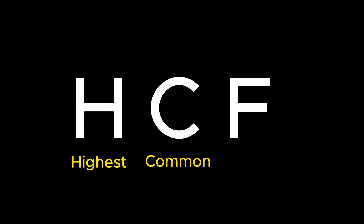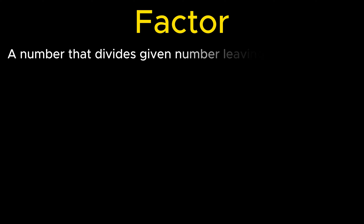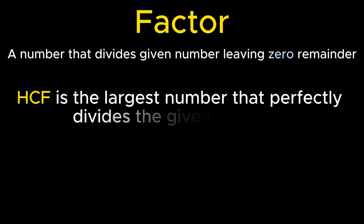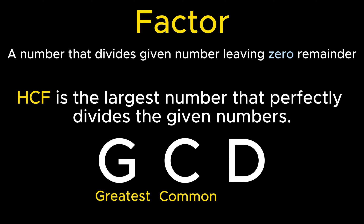In this video we will understand the concept of HCF and different methods to calculate it. HCF stands for Highest Common Factor — a factor refers to the number that divides another number giving zero as remainder. Thus HCF practically gives the largest number that perfectly divides the given numbers. It is also known as GCD, which stands for Greatest Common Divisor.